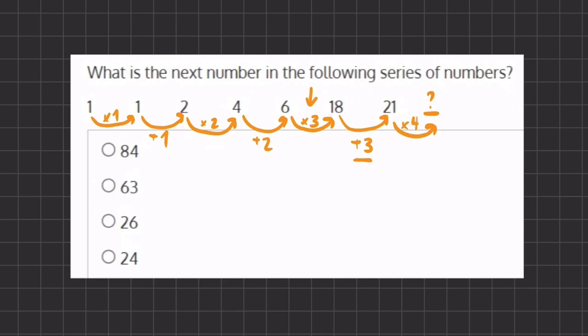Meaning that this missing value will be 21 times 4 which will give us 84. And that will be our final answer.